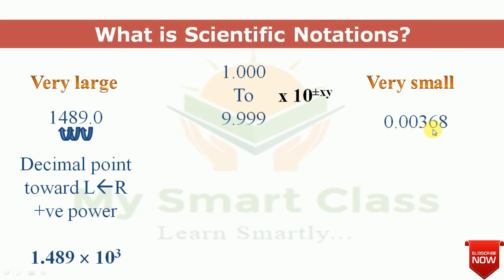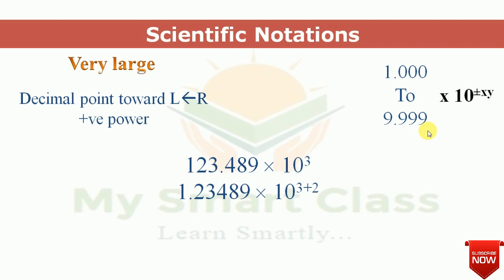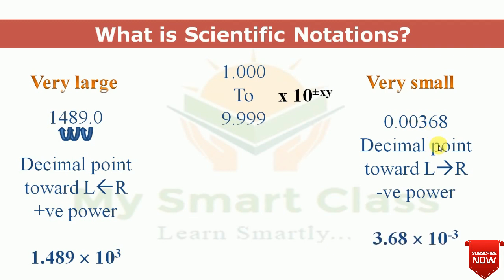This also works for very small numbers. Consider 0.00368 — this is smaller than 1. To make it between 1 and 9.9, we shift the decimal point one time, two times, three times to the right. When moving the decimal point from left to right, the power is negative. We moved three times, so the answer is 3.68 × 10⁻³.